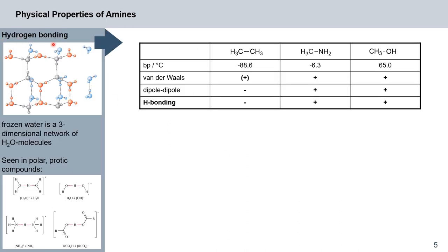Let us briefly recap what we know about hydrogen bonding before discussing the physical properties of amines in bulk. Hydrogen bonds are present in all polar protic compounds — that means compounds with polarized bonds containing hydrogen, usually with elements that have lone electron pairs. One example is frozen water, a three-dimensional network of water molecules in an ice lattice. We see similar hydrogen bonding when we dissolve acids or bases in water, and the same effects apply to amines and carboxylic acids.